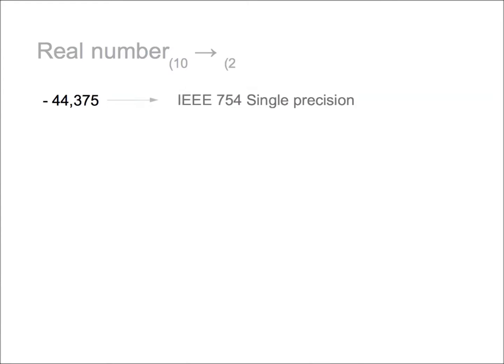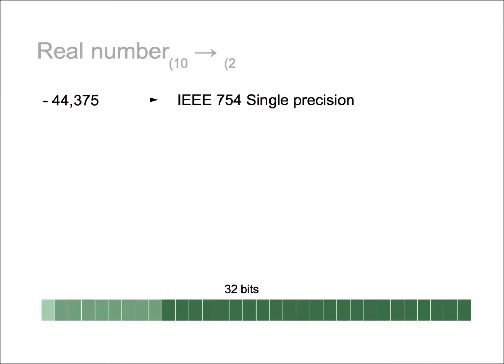In this case, we are going to use the IEEE 754 format for single precision. That is a number of 32 bits of length, with 1 bit for the sign, 8 bits for the exponent, and 23 for the mantissa.